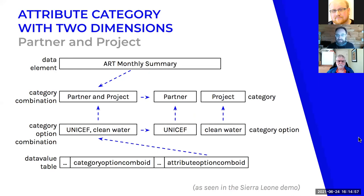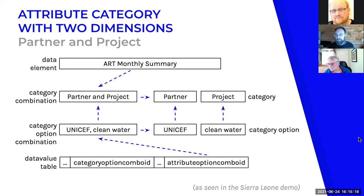With two attribute dimensions — partner and project — for ART monthly summary, the category combination is 'partner and project,' made up of two categories. If UNICEF is the partner and clean water is the project, those are combined into the category option combination 'UNICEF clean water,' and that single object is attached to the attribute option combo ID.